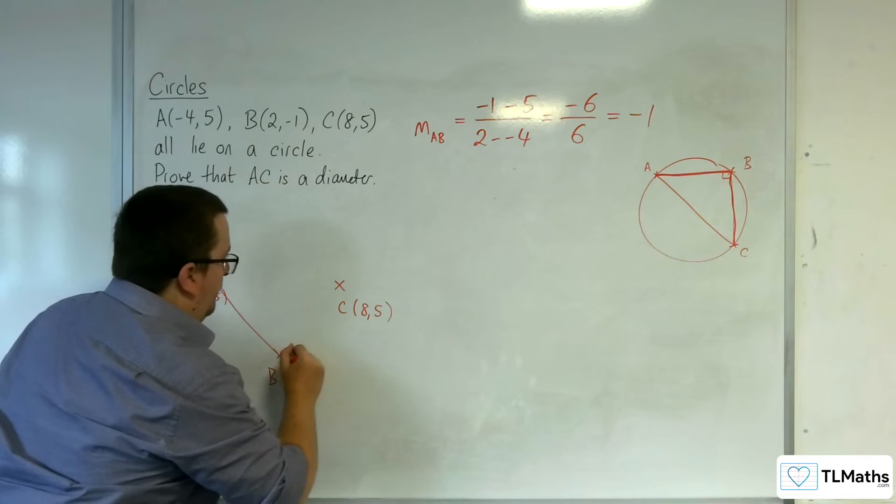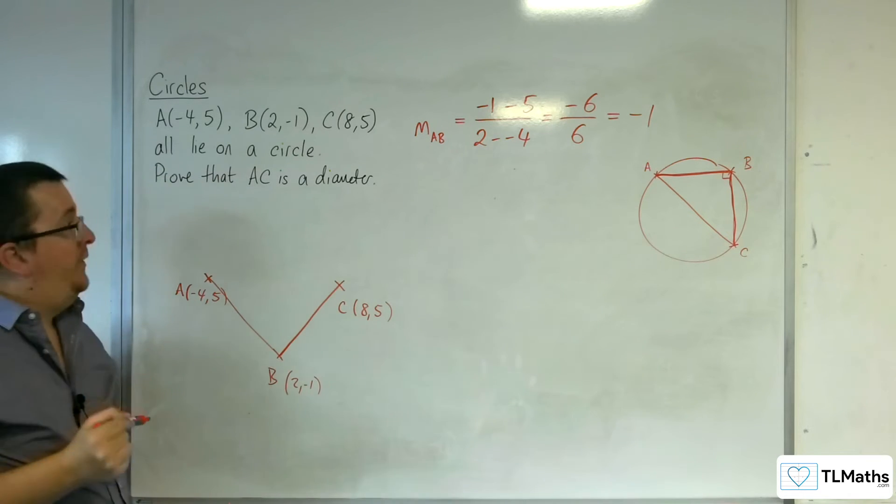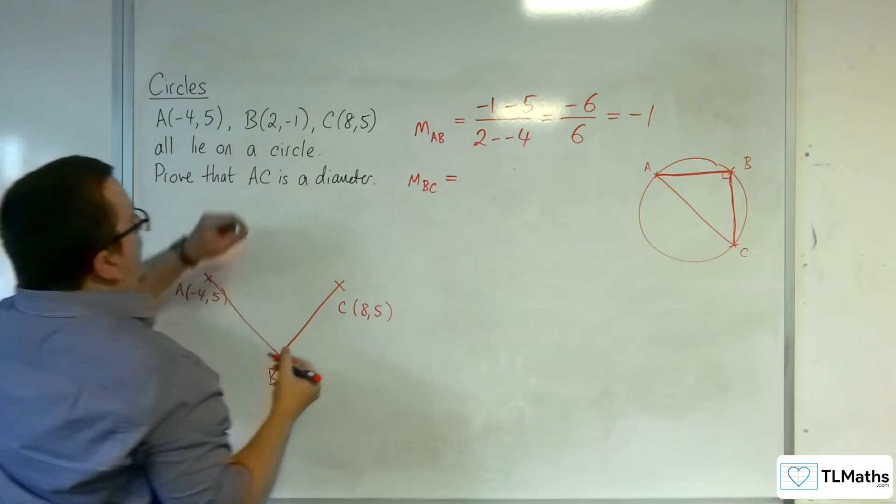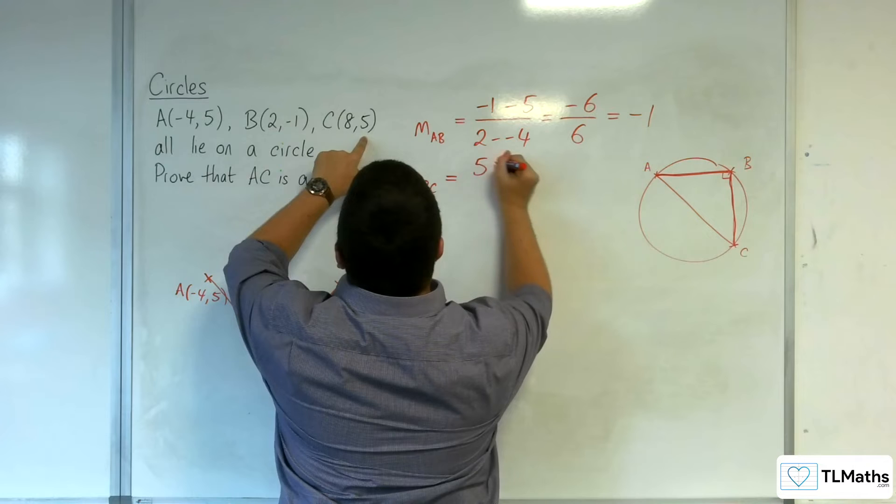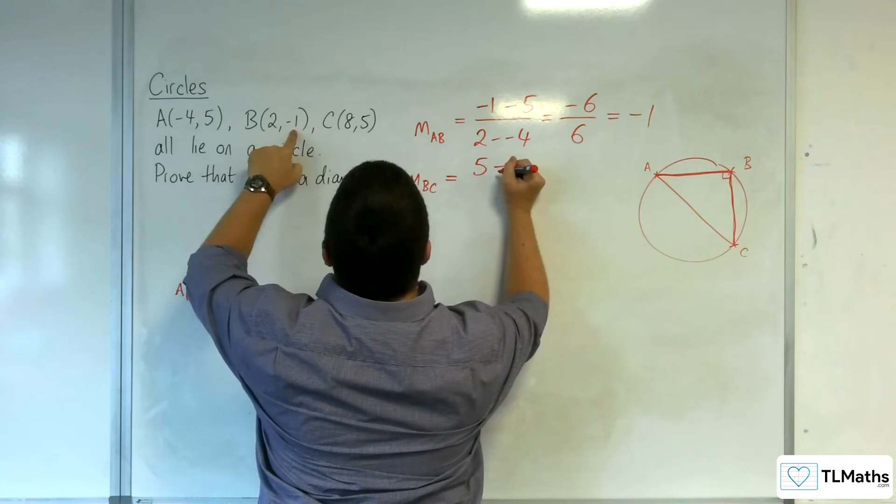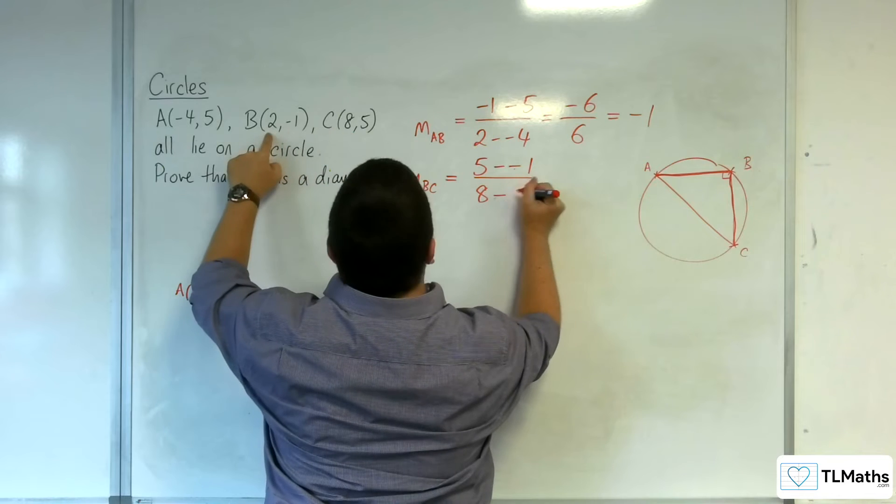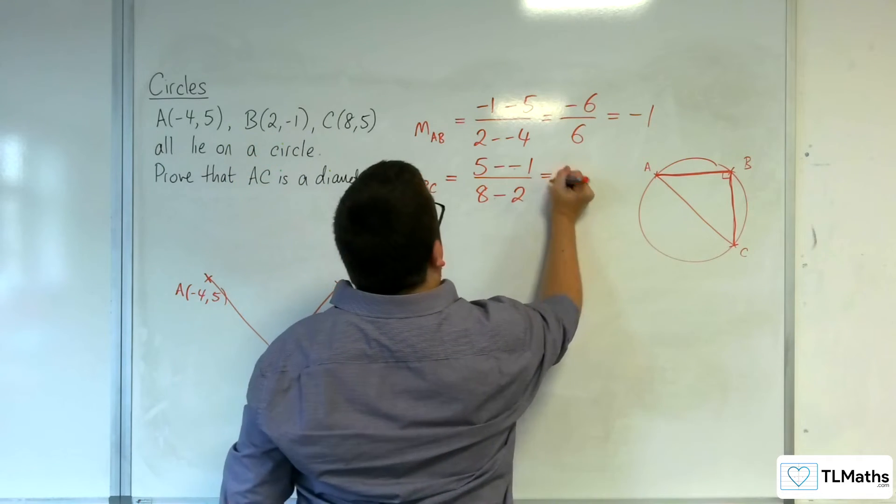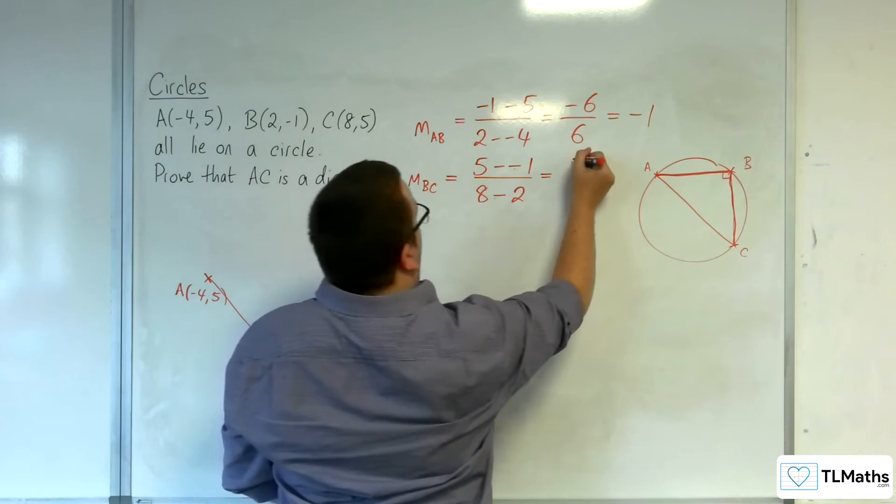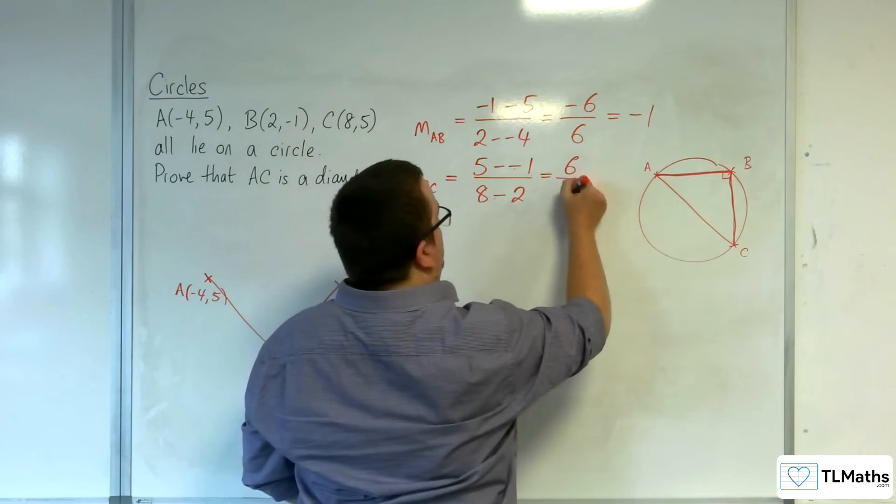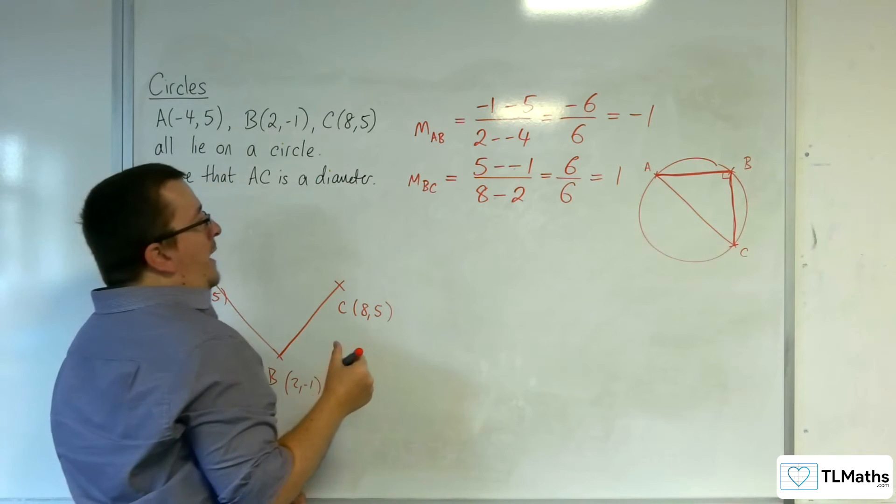Right. Now, we need to find the gradient of BC. So, the gradient of BC is going to be equal to five take away minus one over eight take away two. So, five take away minus one, well, that's six. And in the denominator, we've got eight take away two, which is six, and that's equal to one.